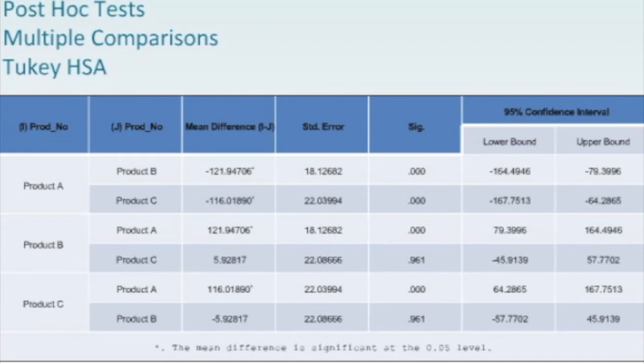The mean difference is a little bit less. It's negative 116. Of course, we get the standard error, and it's also statistically significant, and we see the confidence interval of the difference, which is negative 167 to negative 64.